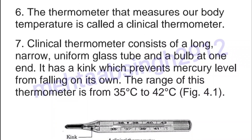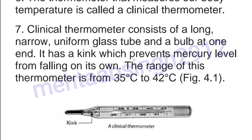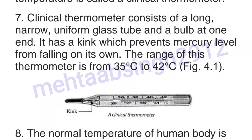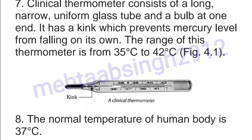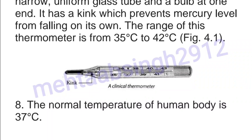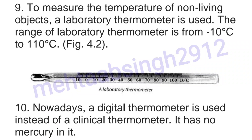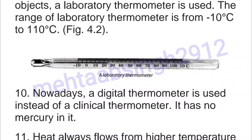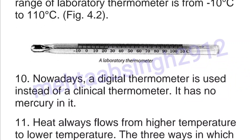The range of the clinical thermometer is from 35 degrees Celsius to 42 degrees Celsius. Eighth, the normal body temperature of the human body is 37 degrees Celsius. Ninth, to measure the temperature of non-living objects, a laboratory thermometer is used. The range of the laboratory thermometer is from minus 10 degrees Celsius to 110 degrees Celsius.